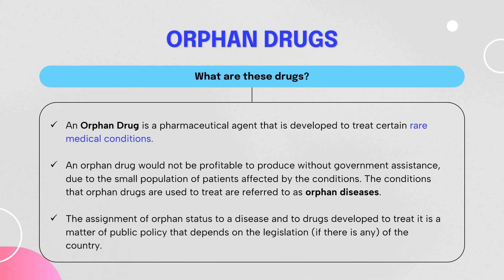The assignment of orphan status to a particular disease varies as a matter of public policy from country to country. In some countries the ratio may be one in one lakh, while in others it may be higher or lower. Declaring a particular disease as a rare or orphan disease varies according to the legislation of each country.